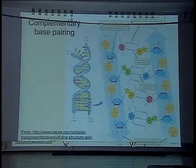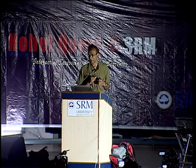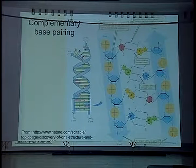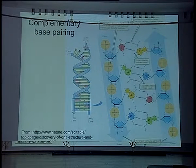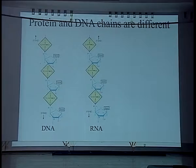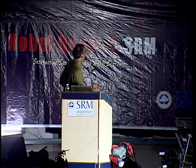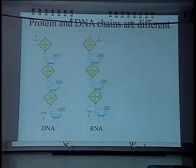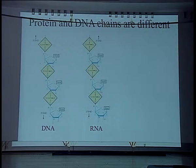It's the sequence of these bases that contains information on how to make proteins, and that was a big puzzle in the early days of molecular biology. Here's DNA, and DNA is copied — one of the strands of DNA is copied to make a rather similar molecule, as far as information content goes, called RNA.